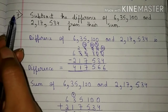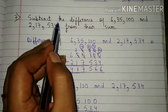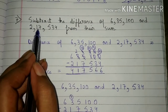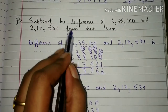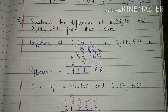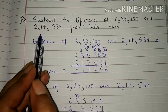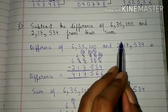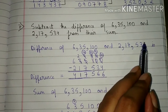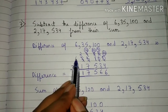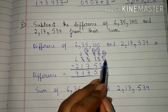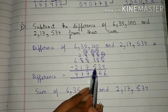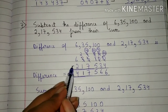Now come to question 7: Subtract the difference of 6,35,100 and 2,17,534 from their sum. In this question, first we will find the difference of 6,35,100 and 2,17,534. So we will write 6,35,100 here and after that we will write 2,17,534 here. Now we will subtract the numbers.